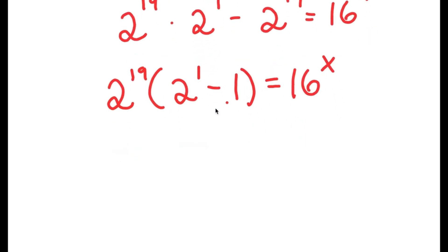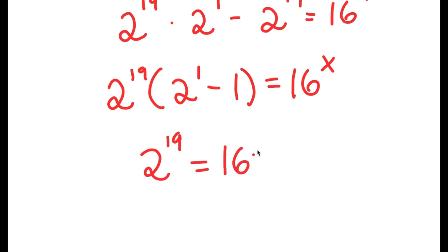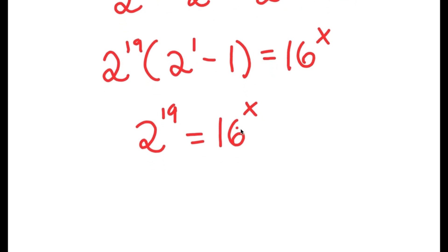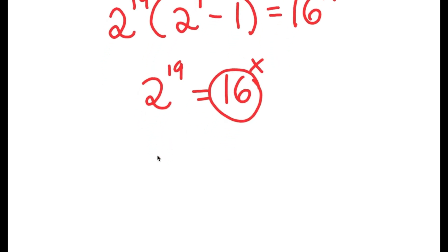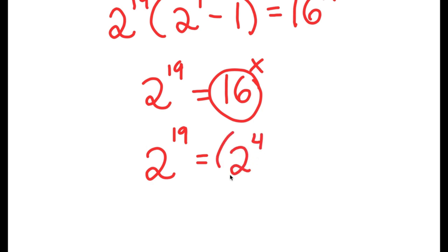And 2 to the power of 1 minus 1, that's simply equal to 1, and anything times 1 is itself. So I have 2 to the power of 19 is equal to 16 to the power of x. Now, 16 is the same thing as 2 to the power of 4. So now I have 2 to the power of 19 is equal to 2 to the power of 4 to the power of x.